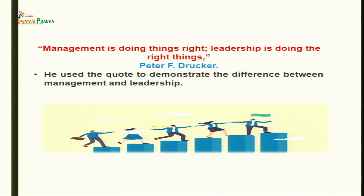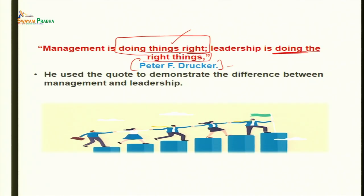One famous researcher in the field of management, Mr. Peter F. Drucker, has talked about management and leadership. He mentioned that management is doing things right — you have been assigned a task and you are doing it appropriately. While leadership is different; it talks about doing the right things. Doing the right things refers to the goals, mission, or vision of the organization drafted by the leader, which is unique and makes the organization different from others.